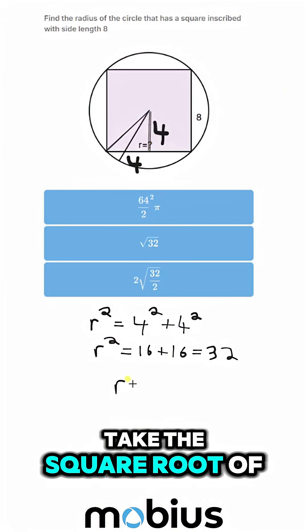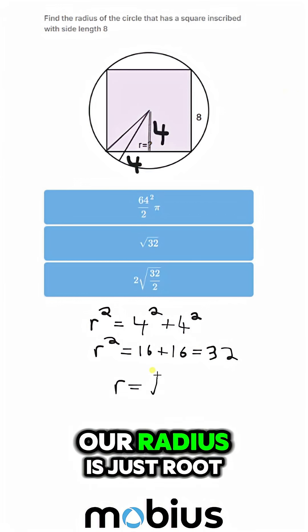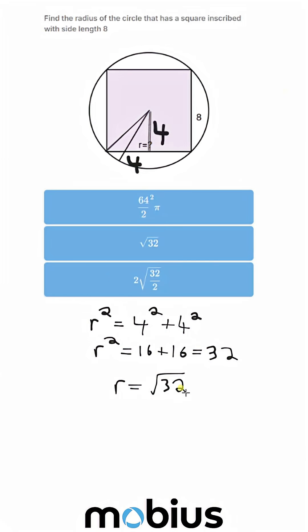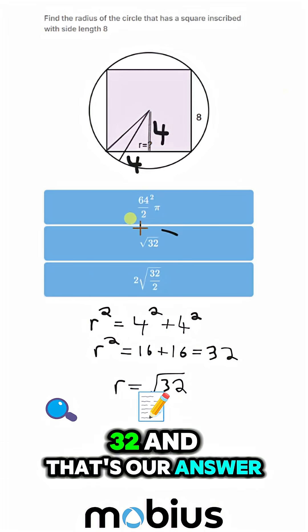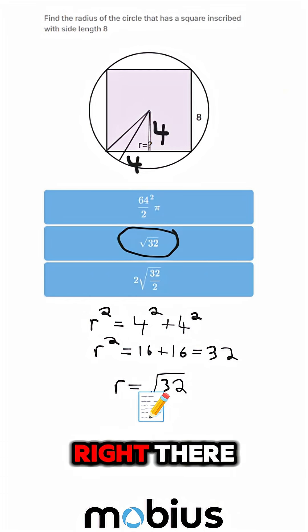If we take the square root of both sides, our radius is just root 32. That's our answer right there.